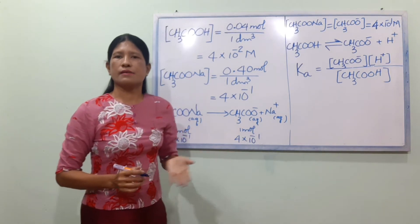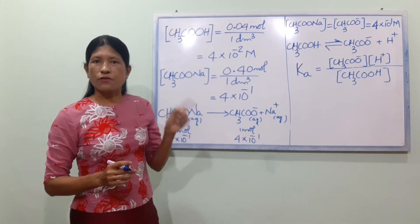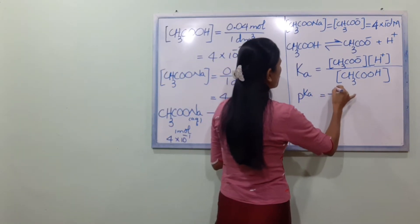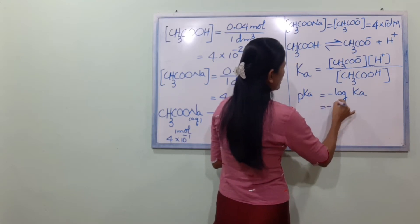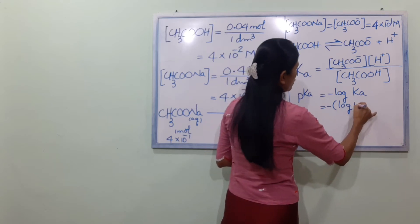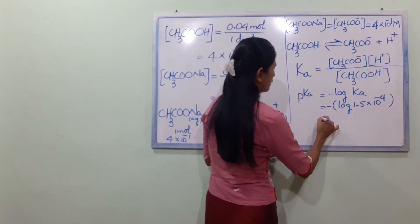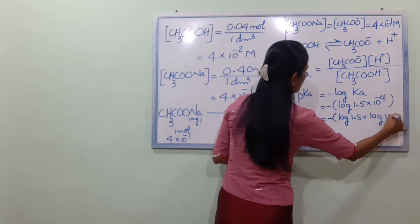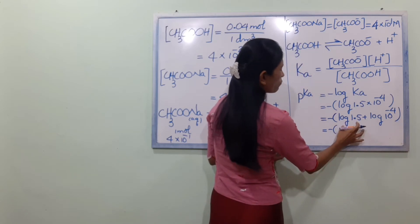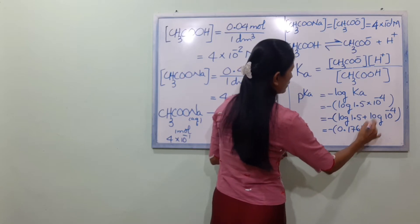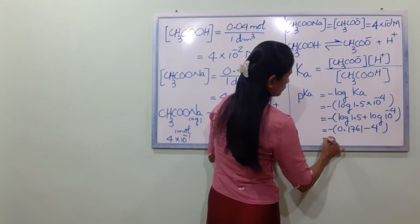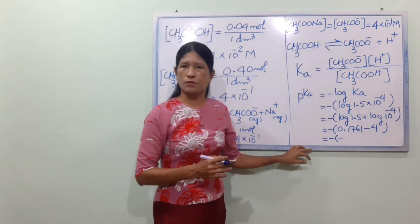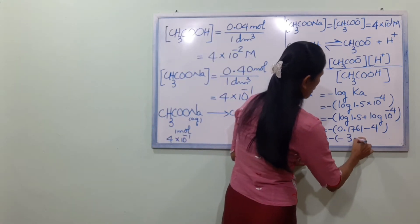The equilibrium constant Ka is equal to the concentration of CH₃COO⁻ multiplied by H⁺ ion concentration, divided by CH₃COOH concentration. We have the Ka equilibrium constant. From pKa: pKa is equal to minus log Ka. Ka is equal to 1.5 into 10 power minus 4. So pKa equals minus log(1.5 × 10⁻⁴) = 0.1761 subtracted from 4, giving pKa equal to 3.8239.